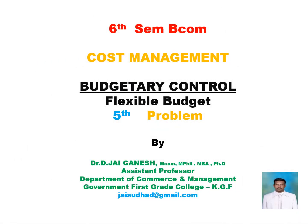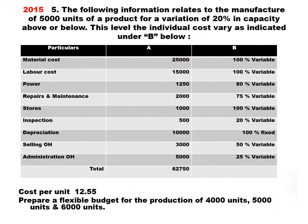Hello students, greetings to all of you. Today we will solve the fifth problem in case of flexible budget. This problem has come from the 2015 question paper. The following information relates to the manufacture of 5000 units of a product, for a variation of 20% in capacity above or below. The information given in the question is based upon 5000 units, and currently the organization is engaged in 5000 units production capacity.